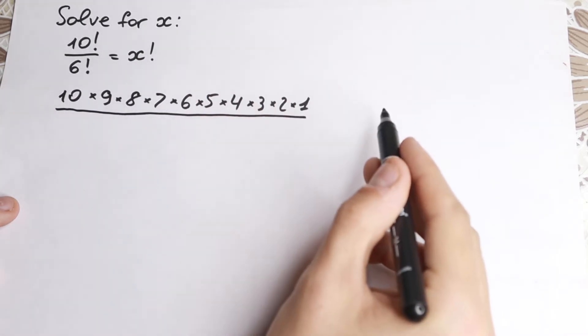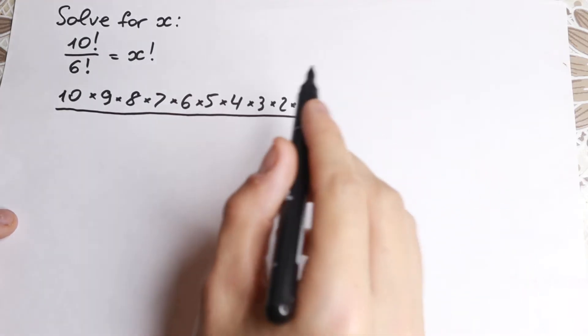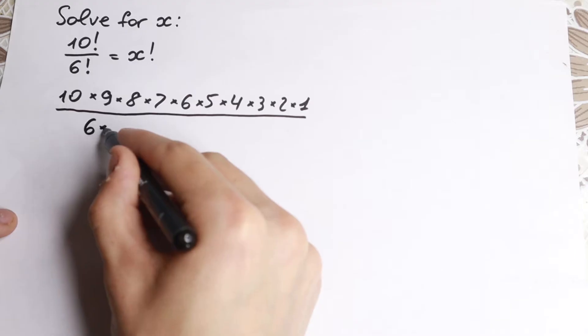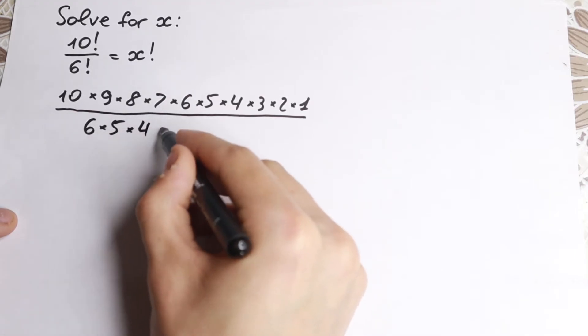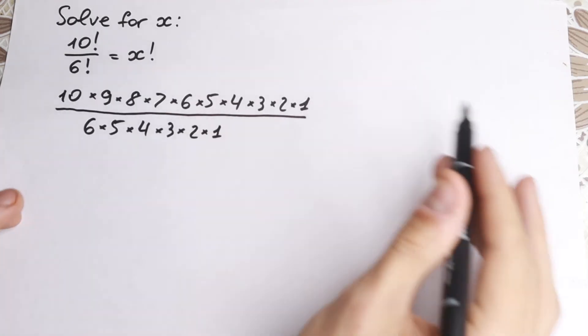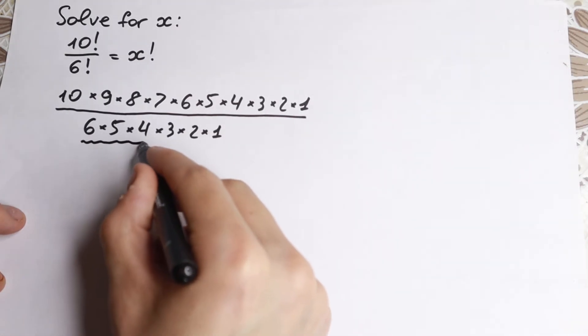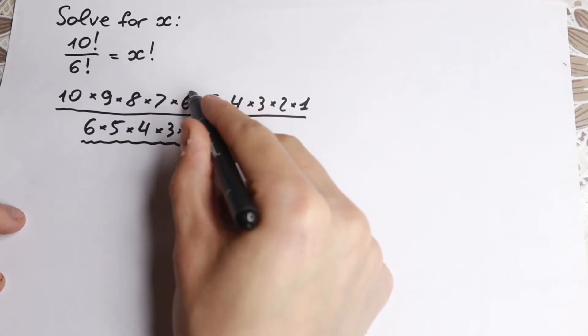And what about this 6 factorial? This is as well a product from 1 to 6 or from 6 to 1. Let's go with 6. So 6 times 5 times 4 times 3 times 2 and times 1. So this is our left hand side. And as a result, take a look. 6, 5, 4, 3, 2, 1. This is the same as this one.